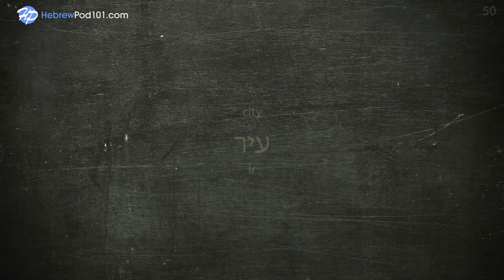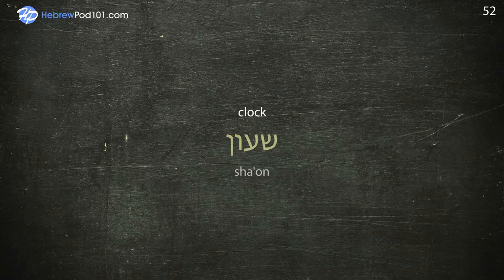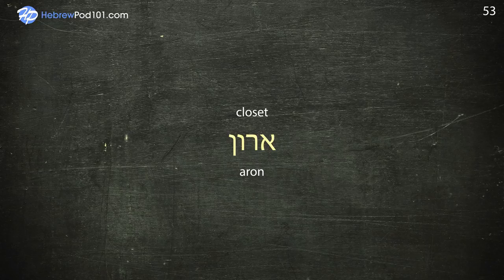Clean — Naki. Clock — Chaon. Closet — Aron.